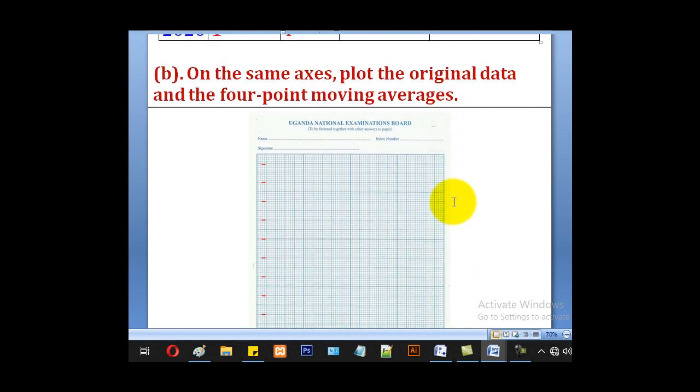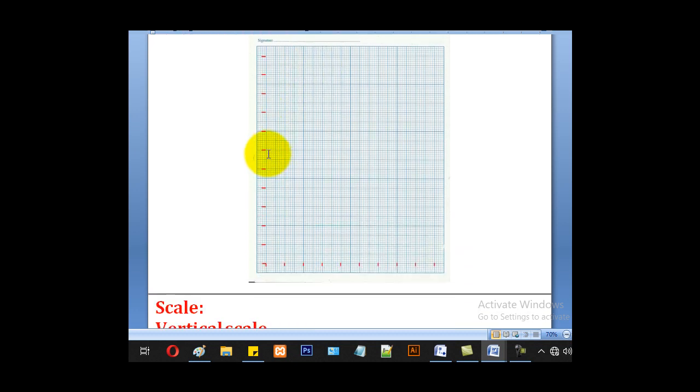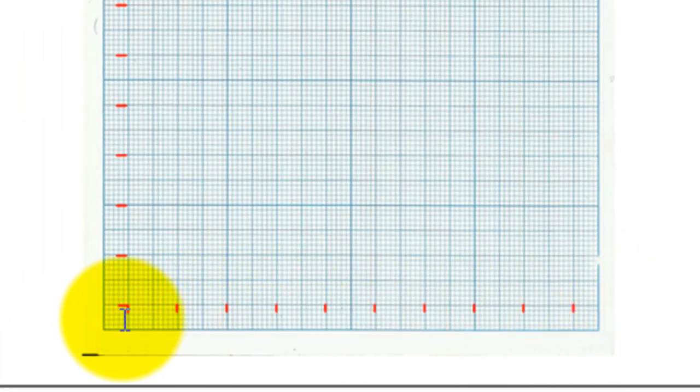We shall go to part B of plotting a graph of the 4 point moving averages and the original data on the same axis. Leave 1cm this side and demarcate, leaving intervals of 2cm. Leave 1cm this side and demarcate, leaving intervals of 2cm.